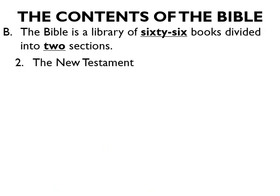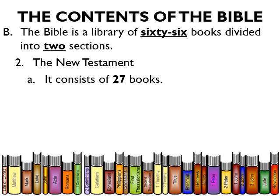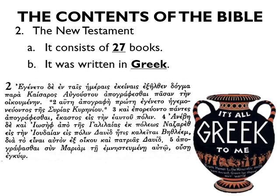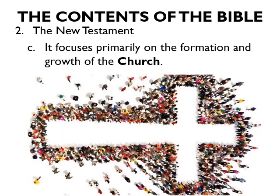Now let's move on to the New Testament. The New Testament consists of 27 books. While the Old Testament was mostly written in Hebrew with a few sections in Aramaic, the New Testament was written in Greek. There are some who believe the book of Matthew was originally written in Aramaic, however there is not as much support for this as for it being originally written in Greek. While the Old Testament primarily focuses on Israel, the New Testament focuses primarily on the formation and growth of the church.